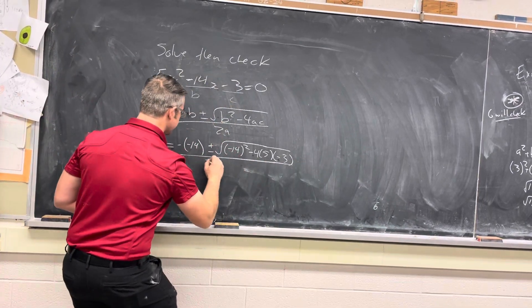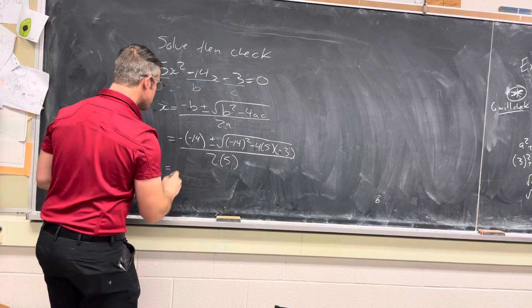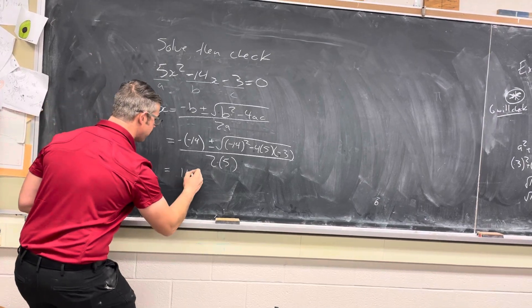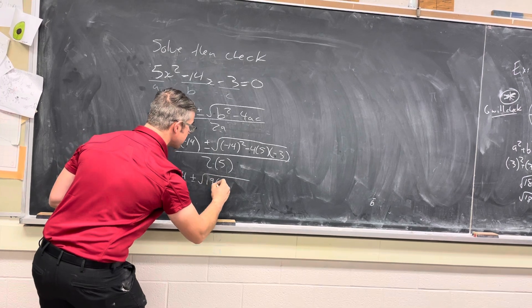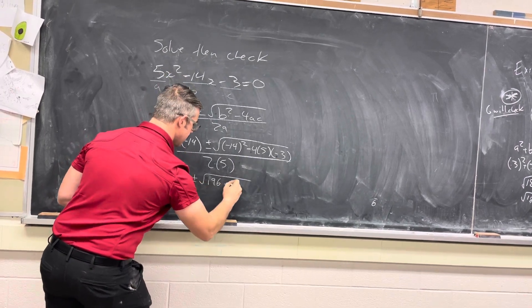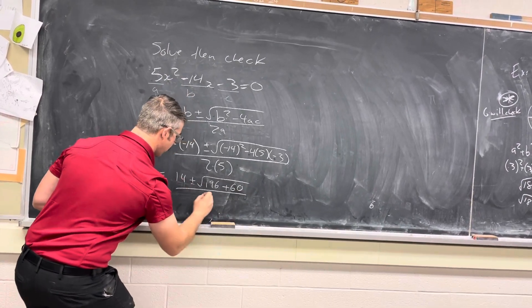And then we'll have 2 times a, which is 2 times 5. So we'll go ahead and simplify this. I believe it's going to be 14 plus or minus the square root of 196. And then this looks to be 60 over 10.